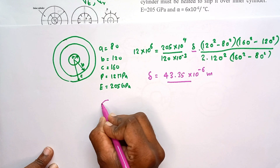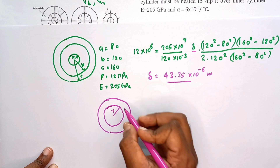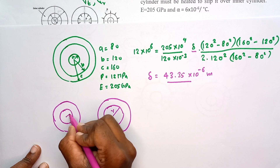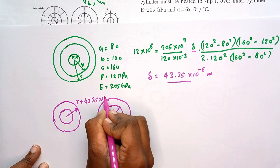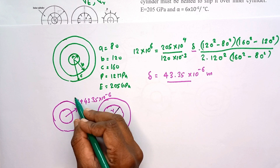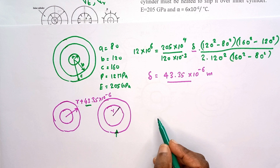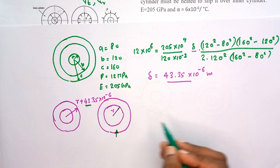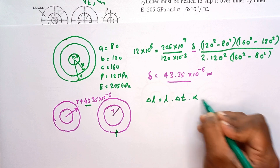If the outer cylinder inner radius is R, and the inner cylinder outer radius is R plus 43.35 times 10 to the power of minus 6 meters, then to assemble these two cylinders, the outer cylinder must be heated until its inner radius expands to at least this value. So it should expand by that amount. We are going to use the linear thermal expansion equation to calculate the temperature required: delta L equals L times delta T times the thermal expansion coefficient alpha.